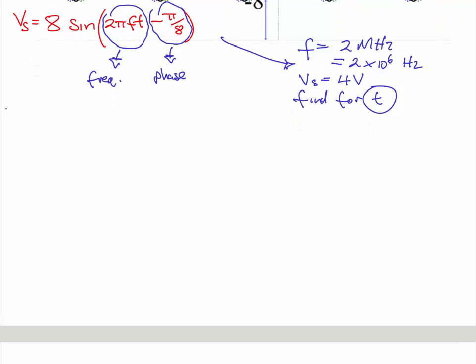We're going to look at this whole thing, and we're going to start transposing. We've done transposition before a few times now on these videos. Divide both sides by 8: Vs/8 = sin(2πft - π/8).